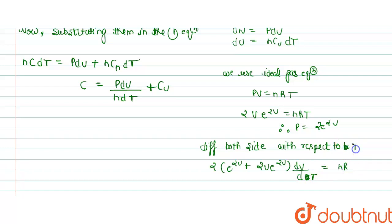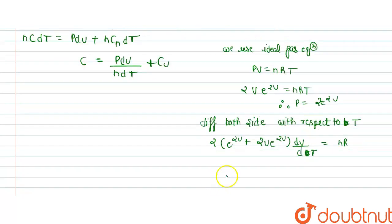And now from this, we have P dV divided by n dT equals R upon 1 plus 2V. So we get C equals Cv plus R upon 1 plus 2V. This is the answer to this question.